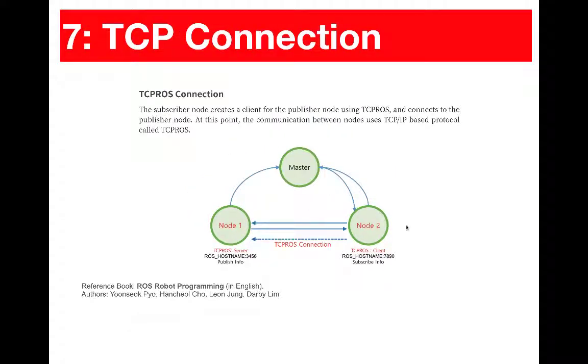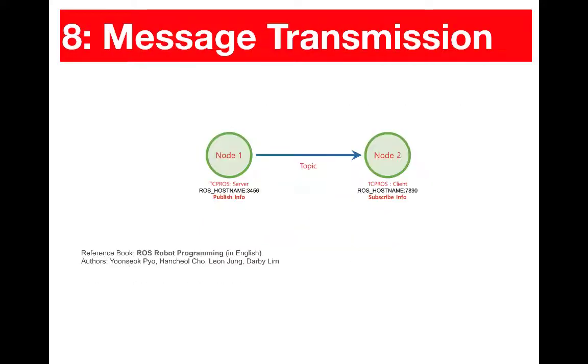So at this time, the subscriber node will create a client for the publisher node using TCP ROS and connects to the publisher node. So the connection will be established at this point in time and the communication between the nodes using TCP IP based protocol can start between the two nodes. So once the connection is fully established, then node 1 can start sending the messages on the common topic of interest and node 1 will be sending messages at regular time intervals depending on the frequency to send messages to node 2.